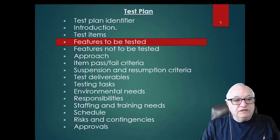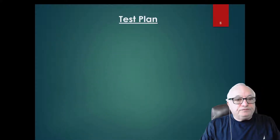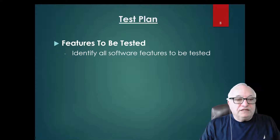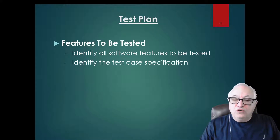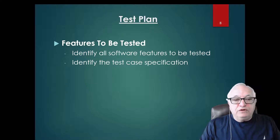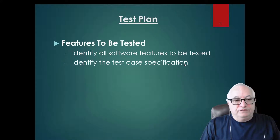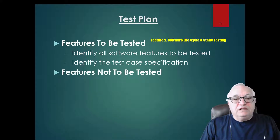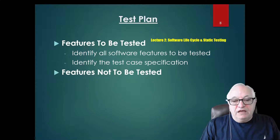Next, in your plan you're going to include the features to be tested and also the features not to be tested. Under features to be tested, you identify all software features and the test cases associated with that test specification — essentially what you're going to test, what functionality, and how you're going to test it. This information comes from static testing as discussed in lecture two.